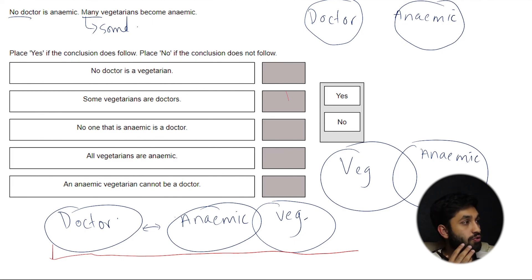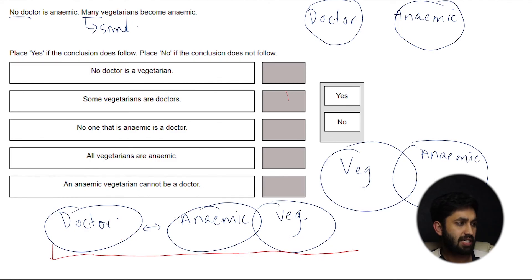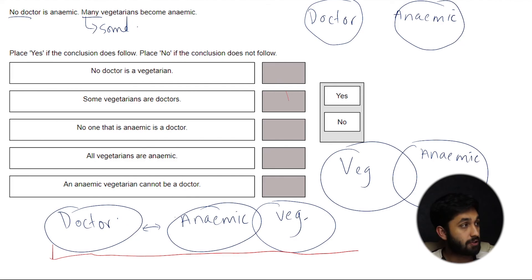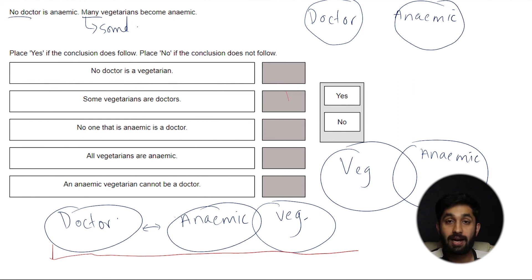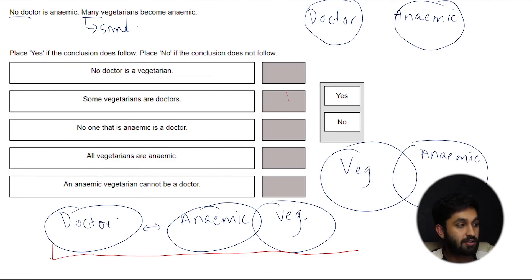Conclusion 1: 'no doctor is a vegetarian' — does that follow? No, because there is no link between doctors and vegetarians in the statements. There could possibly be a connection, but there's no explicit information. So this conclusion does not follow. Conclusion 2: 'some vegetarians are doctors' — once again, we don't know for sure, there's a possibility but we can't confirm it. This does not follow.